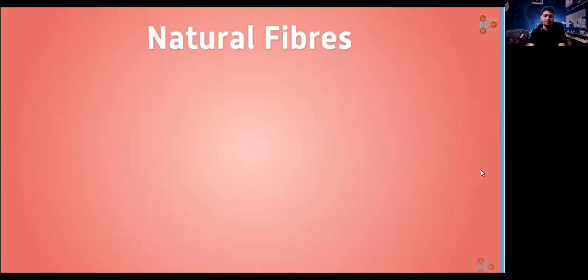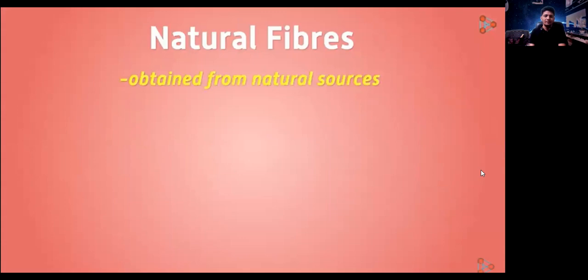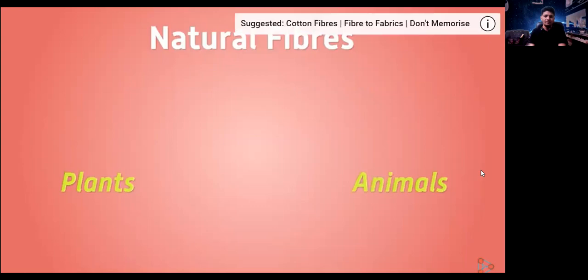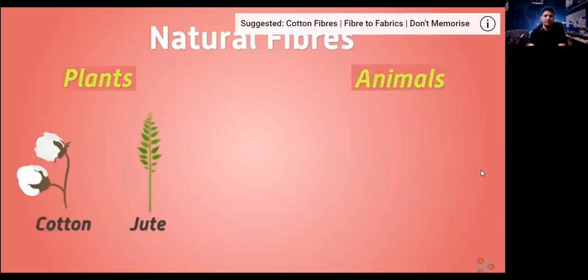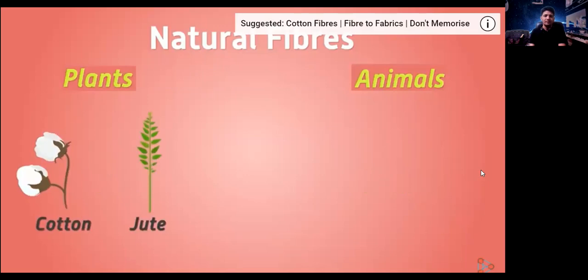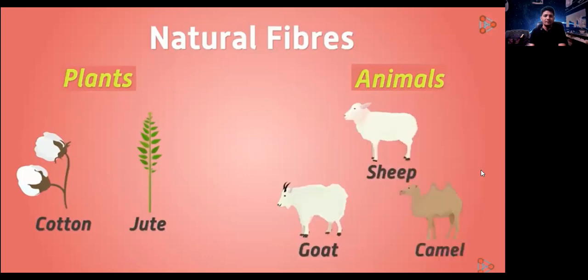One category is natural fibers and the second category is synthetic fibers. Natural fibers, as the name says, are obtained from natural sources. So what could the sources be? Needless to say, the sources would be both plants and animals. Can we list a few examples of each type? Plants like cotton and jute give us natural fibers. Similarly, animals like sheep, goat, camel and so many are also used for their fur and fleece.